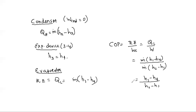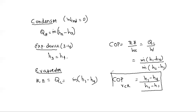The coefficient of performance (COP) is the refrigerating effect divided by the compressor work: COP = Q_L / Ẇ = ṁ(h₁ − h₄) / ṁ(h₂ − h₁) = (h₁ − h₄) / (h₂ − h₁). This is the theoretical COP expression for the vapor compression refrigeration cycle.